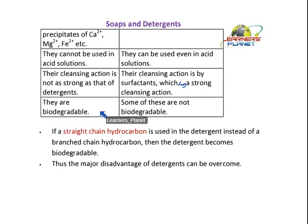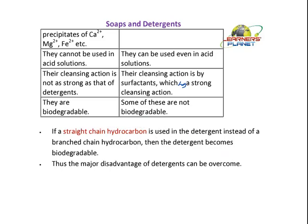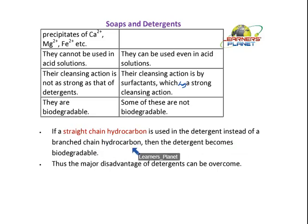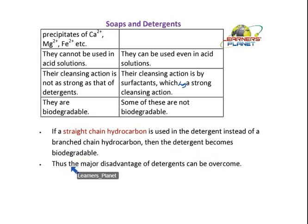Soaps are biodegradable, meaning they can be degraded by microorganisms, but some detergents are not biodegradable. One reason is that detergents contain an unsaturated carbon chain — a carbon chain with double bonds — whereas soaps have a saturated chain with single bonds. However, if a straight-chain hydrocarbon is used in the detergent instead of a branched-chain hydrocarbon, then the detergent becomes biodegradable, and this major disadvantage of detergents can be overcome.